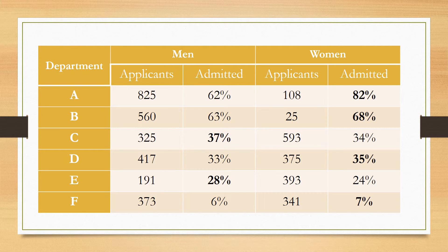What we need to look at further is the individual departments within the university. Here are six of the largest departments at UC Berkeley, showing the number of applicants and admission rates for both men and women. Looking at the bolded numbers in the admitted columns — which represent the higher of the two admission rates between men and women — women are actually favored in four of the six departments. This contradicts what we saw overall, where more men appeared to be admitted.